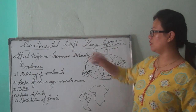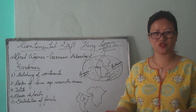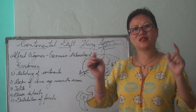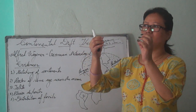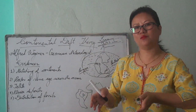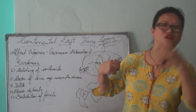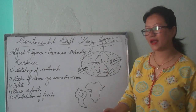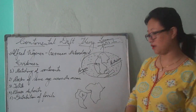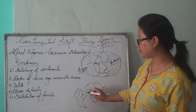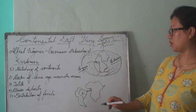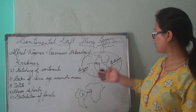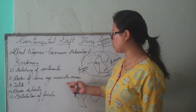Wegener gave some evidences based on his observations. The first evidence is the matching of continents. Like a jigsaw puzzle game where you join parts — for example where the hand or eyes and nose should be — he showed that if you check the shoreline of South America and Africa, it exactly fits together. This was proof that all the land masses were once together as Pangaea.